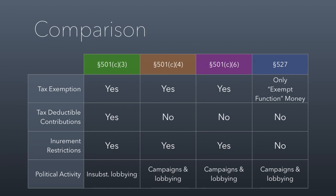If you compare all of these groups in a simple chart, you'll see that all of them are tax-exempt — except with 527s it's only the exempt function money, meaning the political money. The only group that gets tax-deductible contributions is the 501c3 groups. They have inurement restrictions across the board, except 527s don't really have inurement restrictions — because if you're spending the money in a way that benefits privately rather than toward a political campaign, you're going to be taxed anyway. As far as political activity goes, all of the groups can pretty much do what they want politically and lobbying-wise, except for c3s, which are only allowed to engage in insubstantial lobbying and cannot engage in any political campaigns or endorse political candidates. So that's session 2.1 — I hope you enjoyed it, and I'll see you all in class.